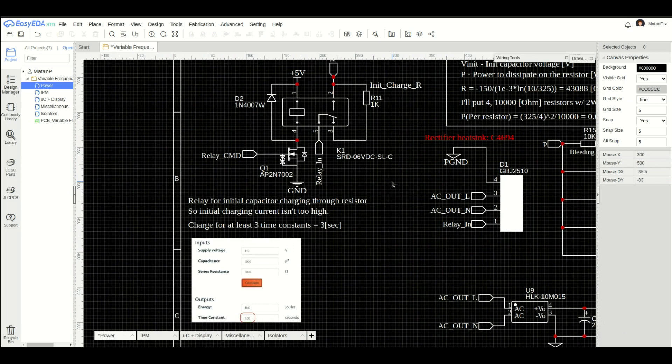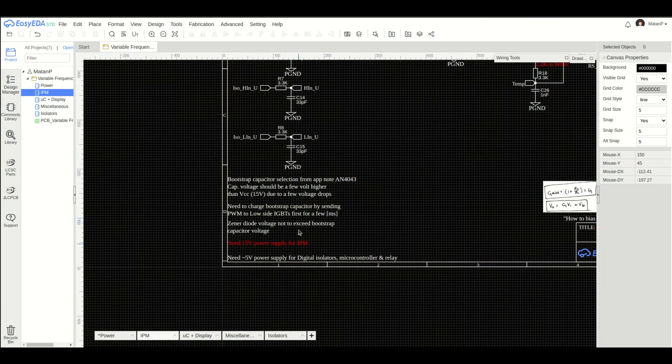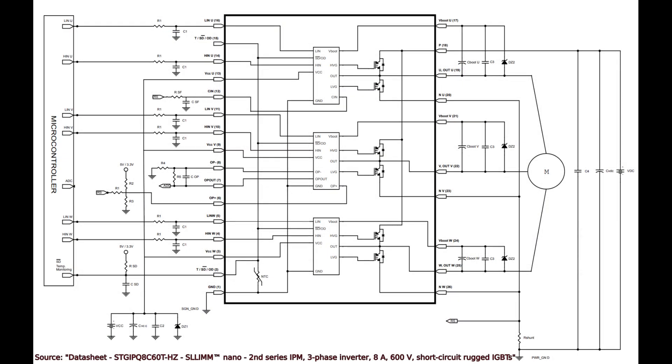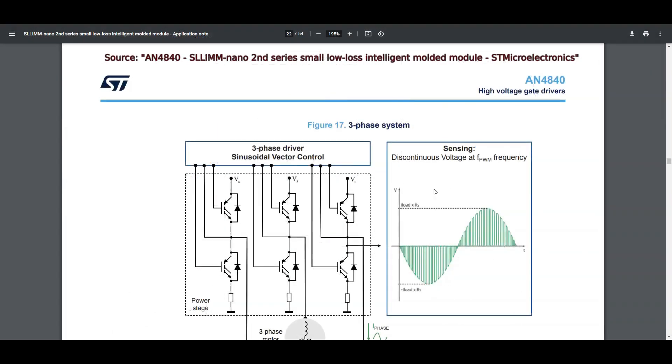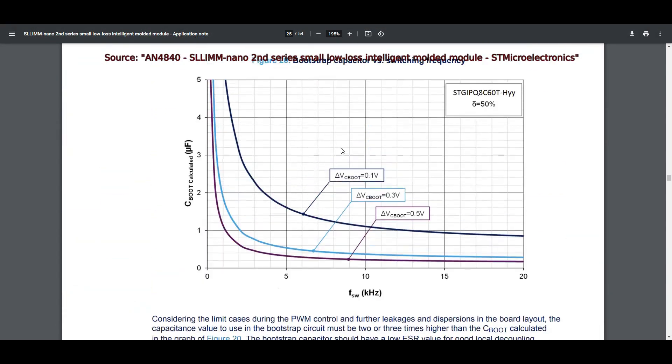Next up is the IPM block. In the IPM block, aside from the few notes I wrote to myself, the schematics are all from the datasheet application example. Choosing the actual values of the components required quite a lot of reading of the datasheet and the application notes.